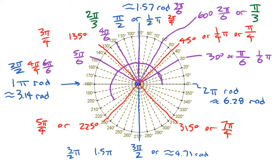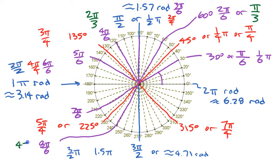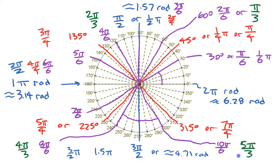210 degrees is 7 pi over 6. The next one, 240 degrees, is 8 pi over 6, or in lowest terms 4 pi over 3. Then we have 9 pi over 6 for 270 degrees, and 10 pi over 6 for 300 degrees, which in lowest terms is 5 pi over 3. And finally 330 degrees is 11 pi over 6.